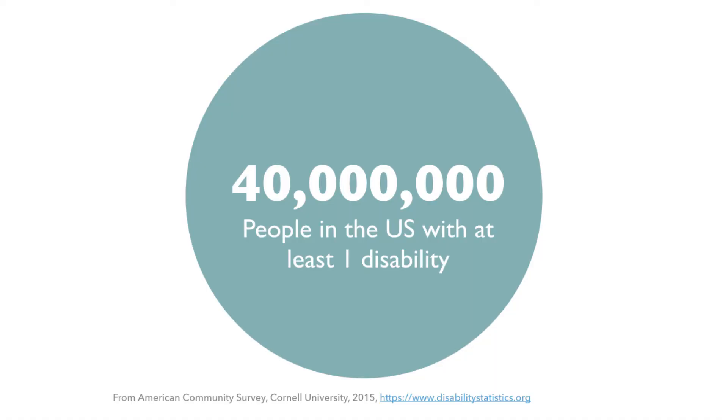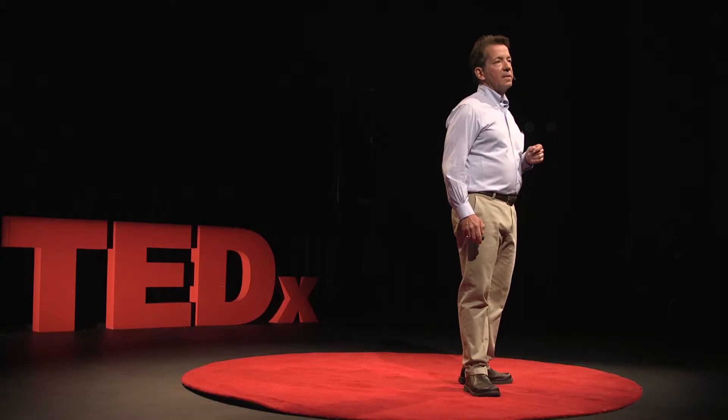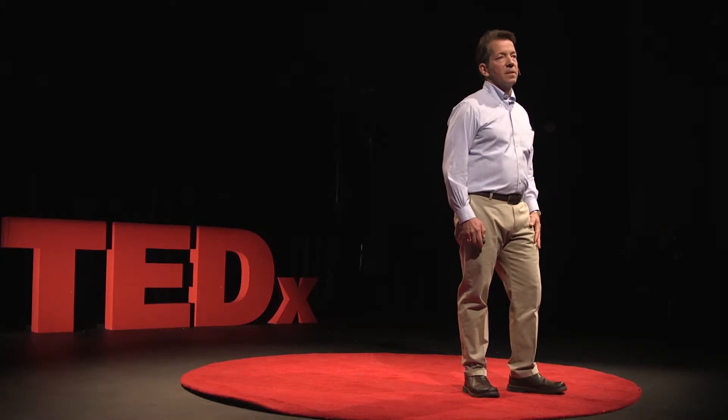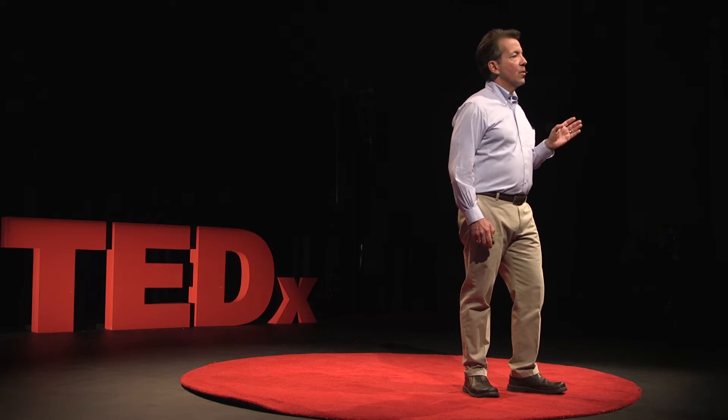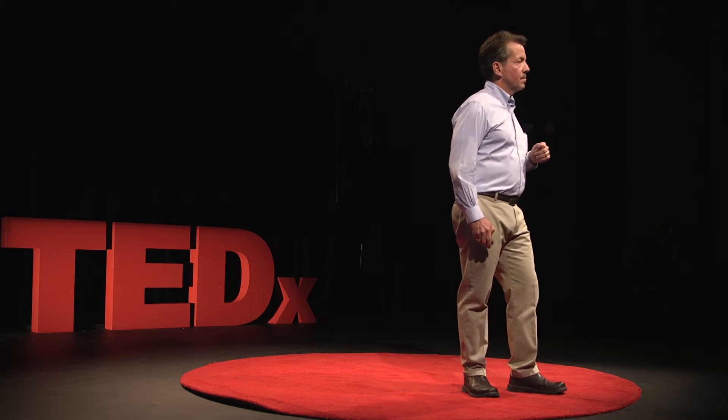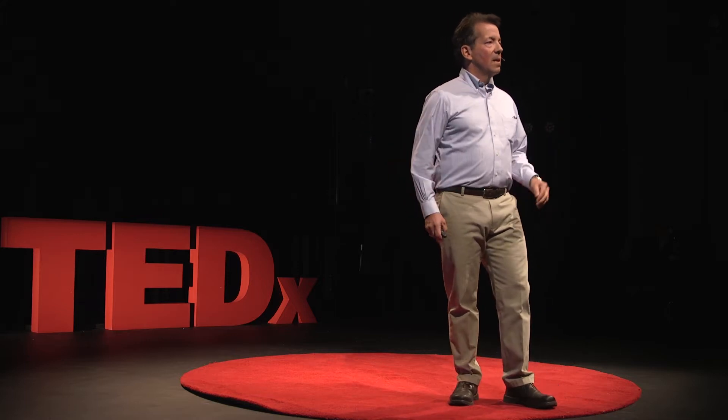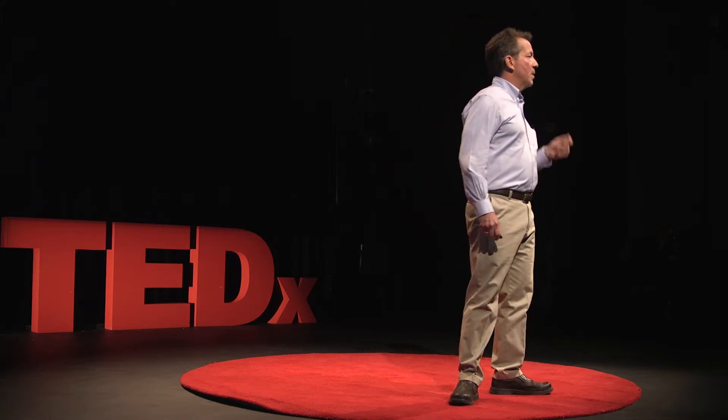I'm talking about the 40 million people in the United States who have at least one disability. That number grows enormously if we talk about the worldwide population. Now, we all understand the concept of a disability. But by applying such a negative label to folks who have one, we're doing them a disservice. So let's get rid of that prefix, 'dis,' which literally means apart, and instead focus on 'able' or 'ability' and call our friends differently abled.